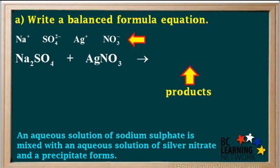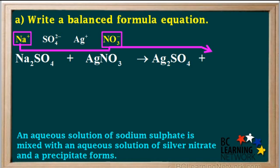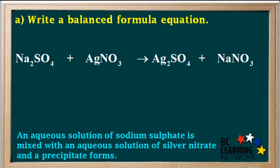Now for the products. This is a type of double replacement reaction, so to write the formulas for the products, we rearrange the ions. The formula for one product is obtained by combining the inner two ions, Ag+ and SO4 2-, and that gives us Ag2SO4, or silver sulfate. Remember the positive ion is always written first in the formula, and the formula for the second product is obtained by combining the outer two ions, Na+ and NO3-, giving us NaNO3, or sodium nitrate.